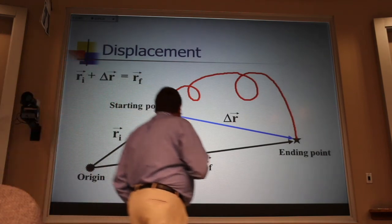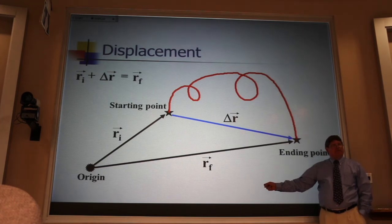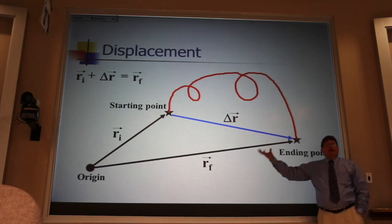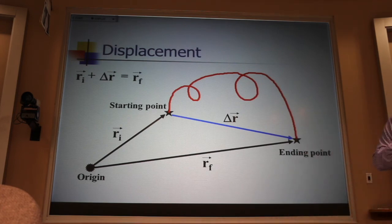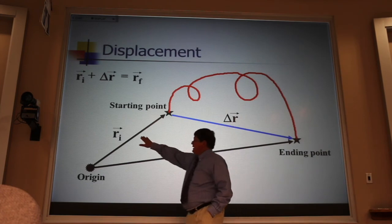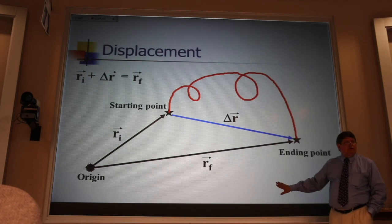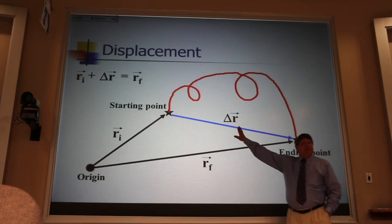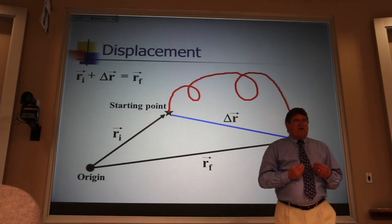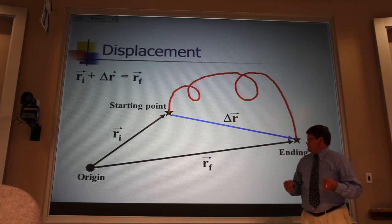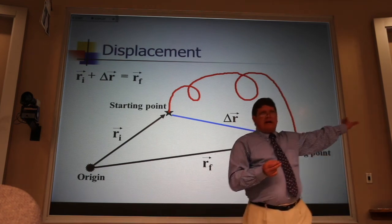The second idea is that if I had chosen my origin over here, some of these vectors would change, some not. What about these position vectors? Would they be different? Yes. They would. Because now they'd be starting at some origin over here. But the displacement vector would be exactly the same regardless of what I choose for my origin.